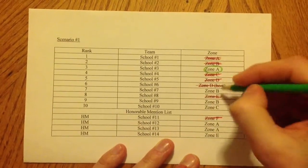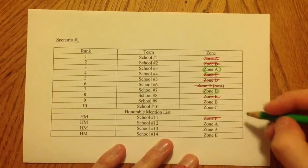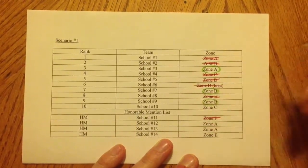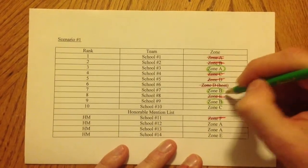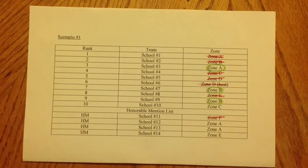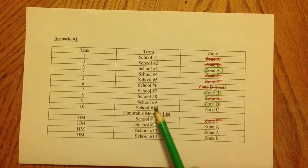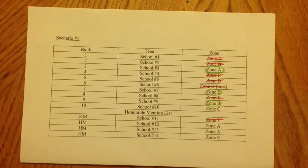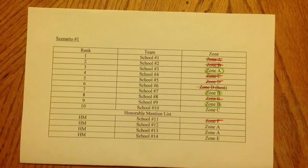Then moving down the list in order, we can see that Zone B has a team ranked at number seven and also a team ranked at number nine. So in this scenario, the three wildcards would be distributed: one to Zone A and two wildcards to Zone B. It is important to note that the wildcards are not actually given to the teams themselves, but to the zone that that team is from.